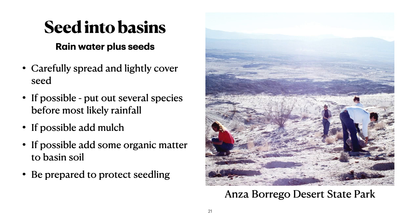One of the low-cost options combines seeding into basins as a way to get water and seeds in the same place — to spread the seed carefully and lightly cover it so it doesn't blow away. If possible, put out several species before the most likely rainfall. If you have a variety of species, the chances of hitting conditions that are good for one are better. If possible, we would add mulch and some organic matter. This picture shows an area of Anza Borrego Desert State Park that had been totally denuded by vehicle operation — it's been pitted, seeded, and mulched, and it was very successful.